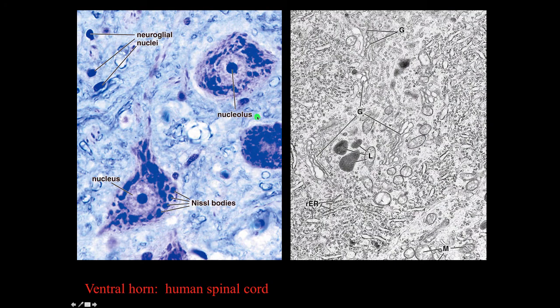Here is a histological image and an electron microscopic image of some neurons in the ventral horn of the spinal cord. You can see that neurons are very big cells with very prominent nuclei and prominent nucleoli. The smaller nuclei shown here would be nuclei of supporting cells — satellite cells or glial cells — and since this is the spinal cord, we would call them neuroglial cells.